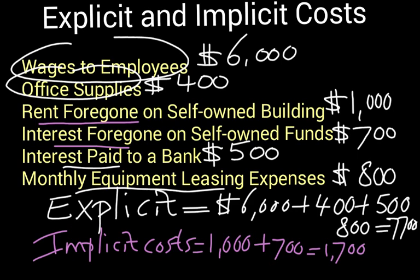The total economic costs are the sum of explicit plus implicit costs: $7,700 plus $1,700. Note that in quiz problems, another implicit cost may be the value of the owner's time — if specifically mentioned, that is also implicit. If the owner pays themselves a salary and is on the payroll, however, that would be an explicit cost. That's the sum of total economic costs — explicit and implicit. I hope it makes sense.